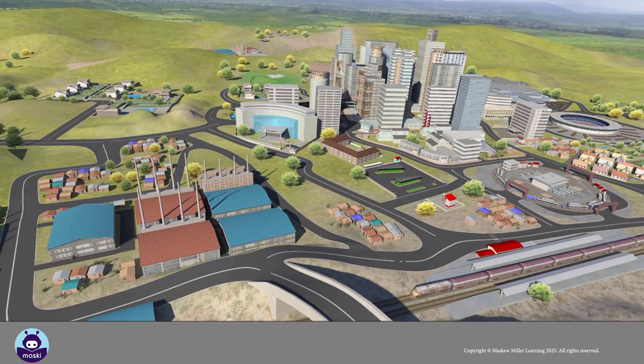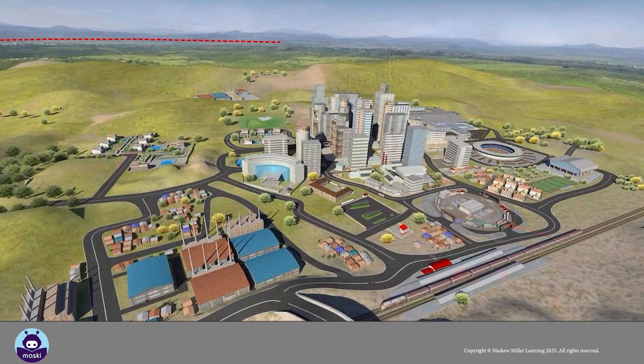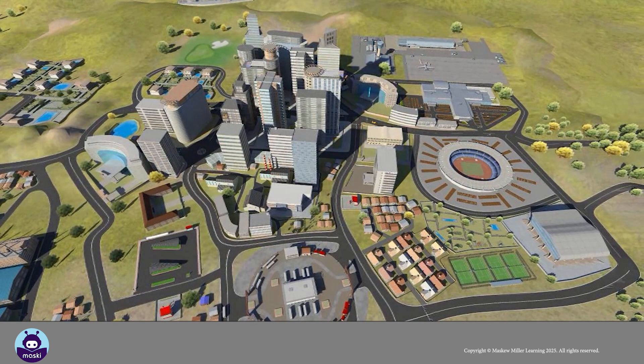A high oblique photograph shows the horizon in the image. A low oblique photograph is taken from a lower angle and the horizon is not visible.